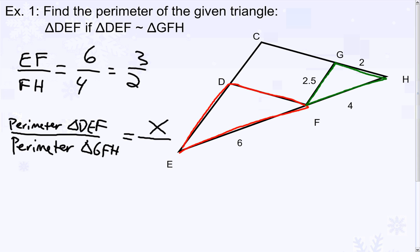However, the sides of triangle GFH are 4, 2, and 2.5. That means the perimeter of that triangle, by adding all three sides, is 8.5.